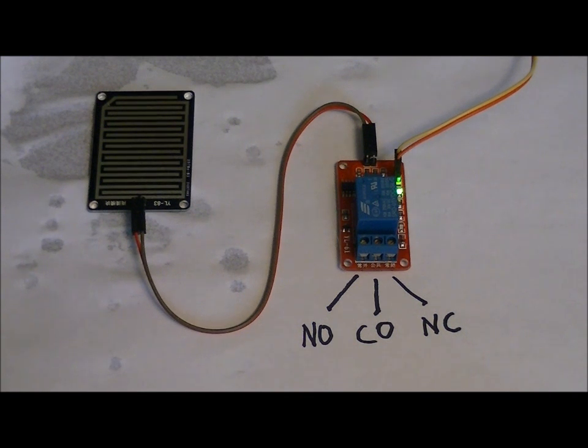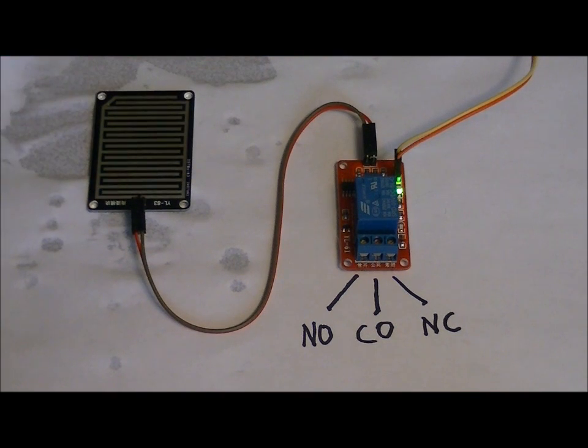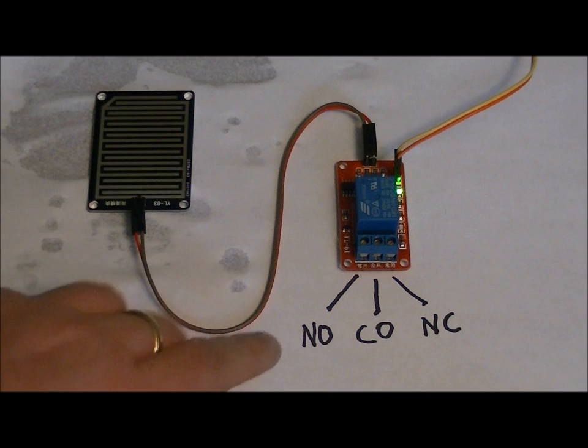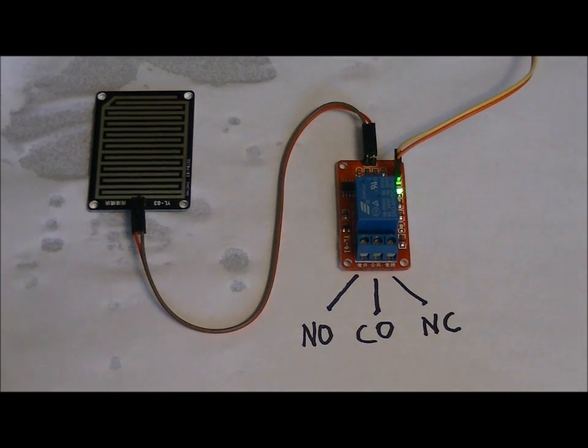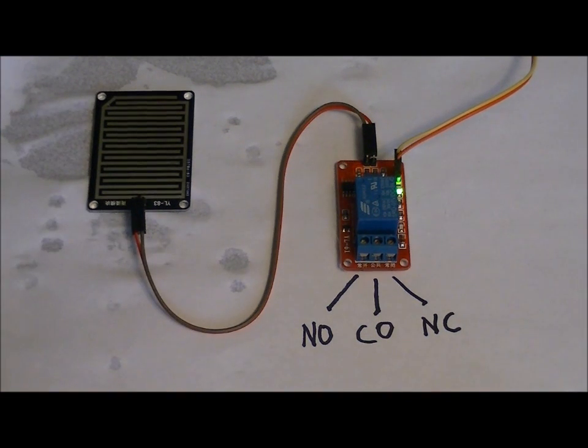When the short is detected—and you have to tune the sensitivity, mind you—the common pin connects to the normally open pin. Then when the relay turns off, when this has been wiped clean, the common pin reconnects to the normally closed pin.